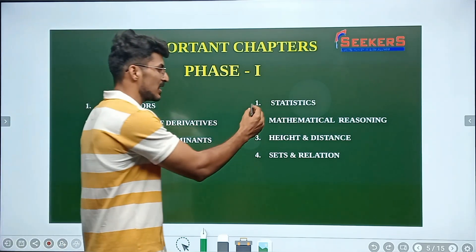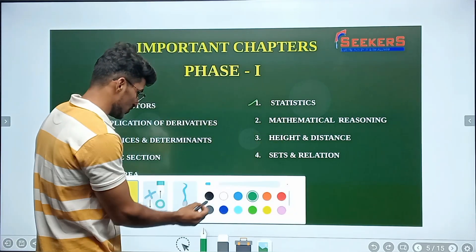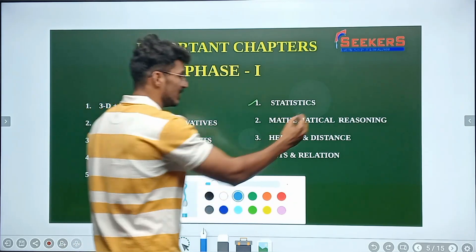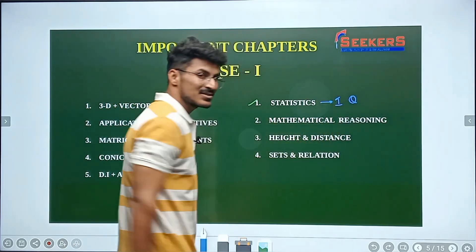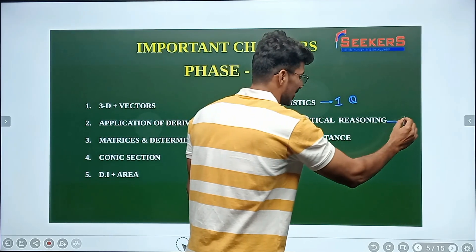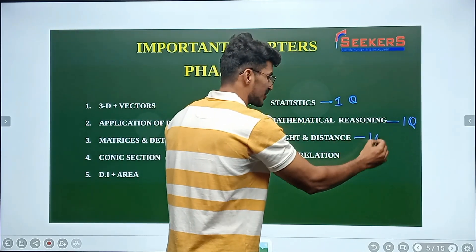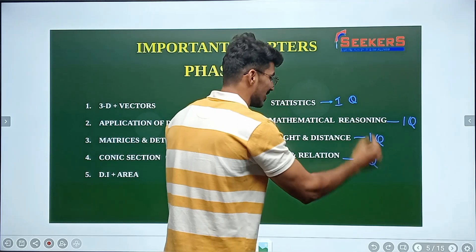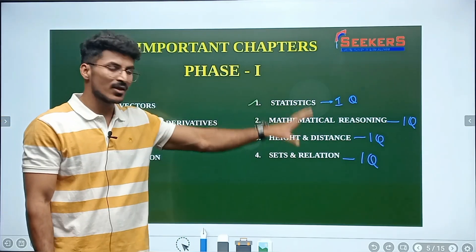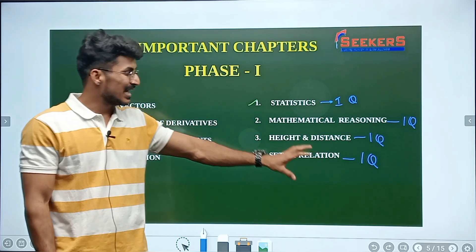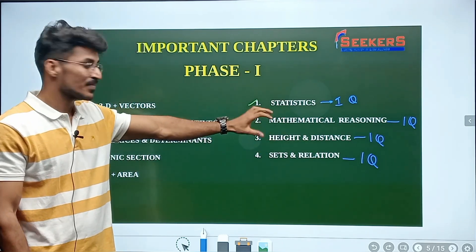Now coming to the topics: the first topic I would prioritize is statistics. Every year you could expect one question from statistics, mathematical reasoning one question, heights and distance one question, and sets and relations one question. So these four topics will give you four questions, and very easily you can solve these four questions.